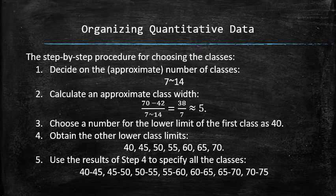We choose the lower limit of the smallest class to be 40 as it is a very nice round number that is less than the smallest value in the data set. We obtain the other lower class limits by adding the class width 5 to the lowest lower class limit 40 and we get 40, 45, 50, 55, 60, 65, and 70. We use these results and specify all the classes: 40 to 45, 45 to 50, 50 to 55, 55 to 60, from 60 to 65, from 65 to 70, and from 70 to 75.